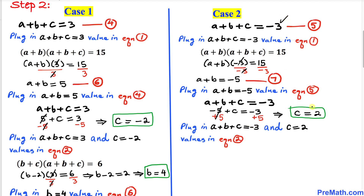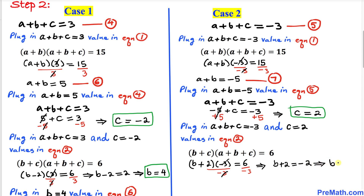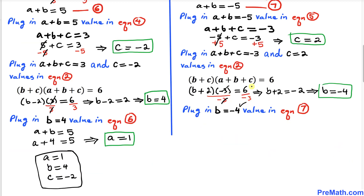We plug c = 2 and a+b+c = -3 into equation 2: (b + 2)(-3) = 6. Dividing both sides by -3, we get b + 2 = -2, so b = -4.